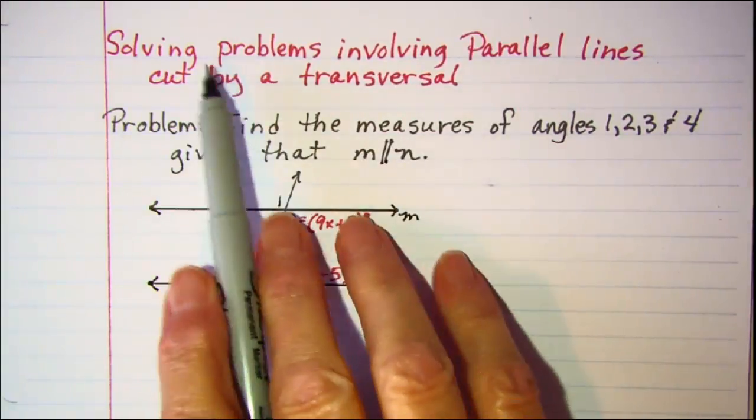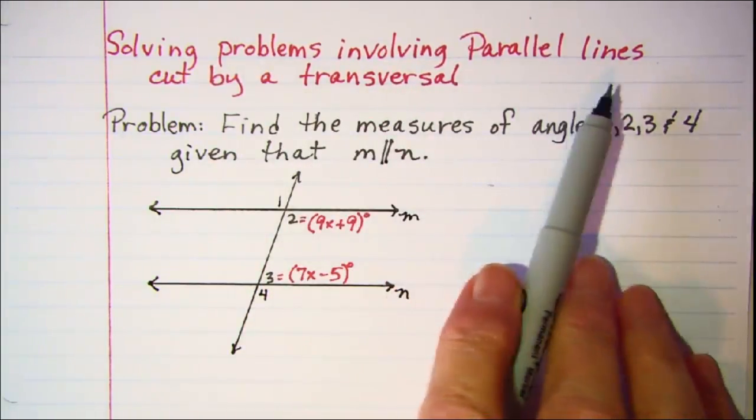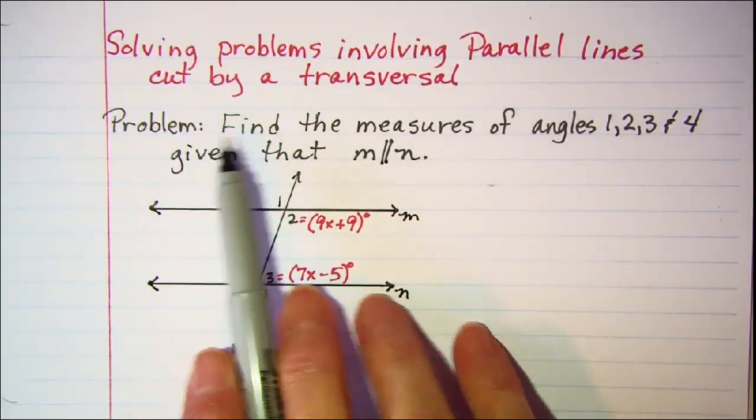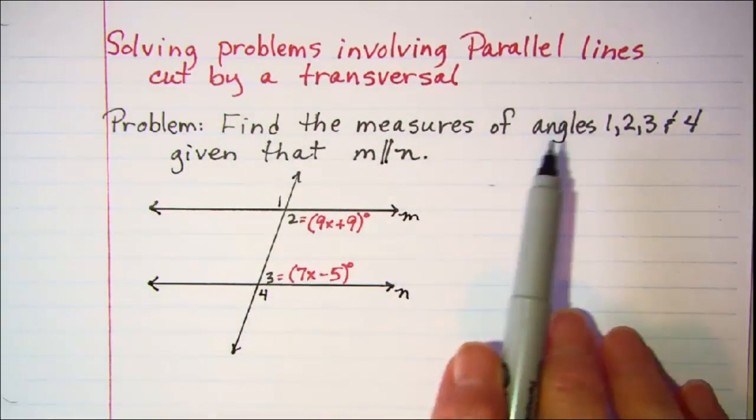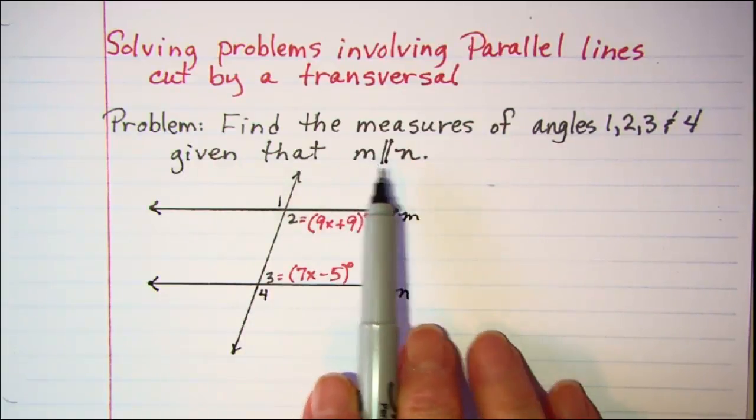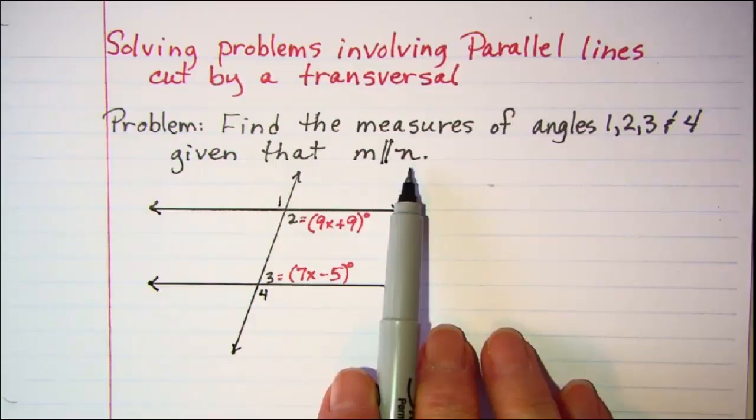In this video, we'll be solving problems involving parallel lines cut by a transversal. The problem that we'll look at is to find the measures of angles 1, 2, 3, and 4, given that line M is parallel to line N.